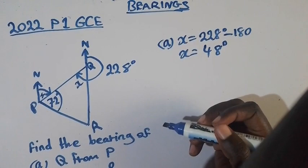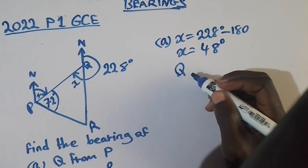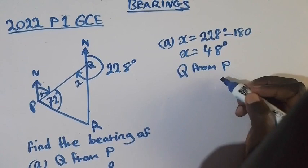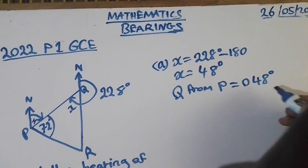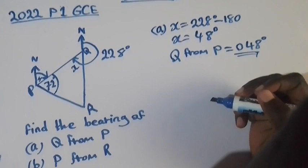Now bearings move with three figures. So for us to conclude our question, which is the bearing of Q from P, this one will be equal to 048 degrees. So this is the bearing we have calculated. We go to part B.